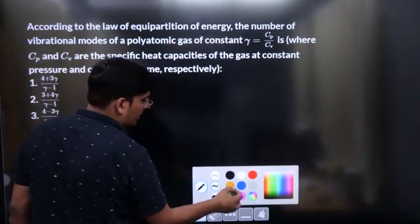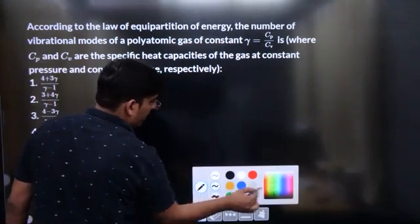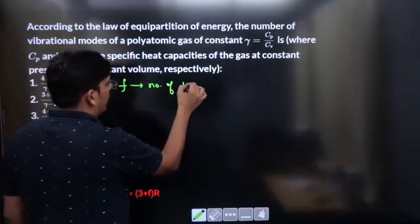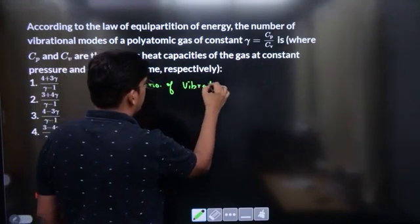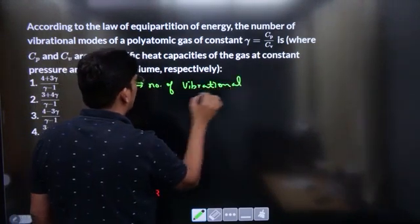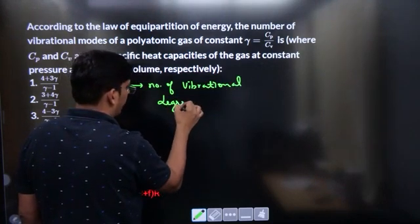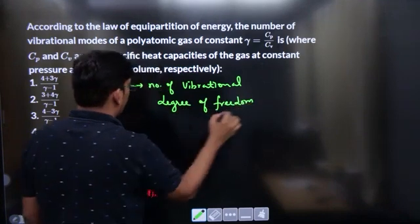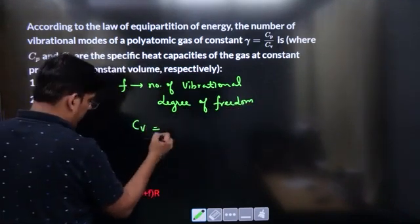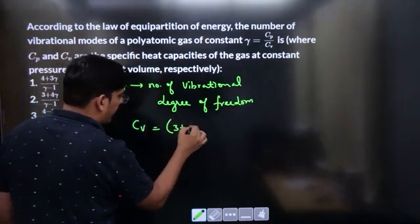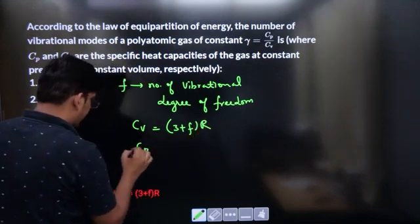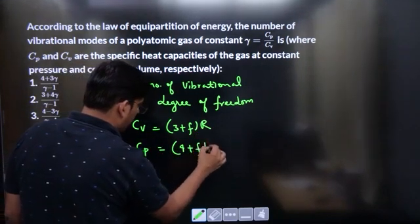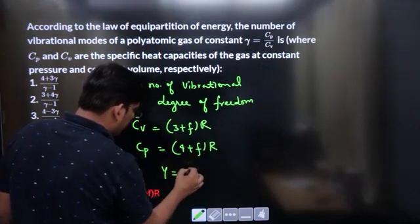Dear students, I'll use this standard formula. If F is the number of vibrational degrees of freedom, then Cv is already given in the hint. It is 3 plus F times R and Cp minus Cv is R. So it would be 4 plus F divided by R. Now you know that gamma is Cp by Cv.